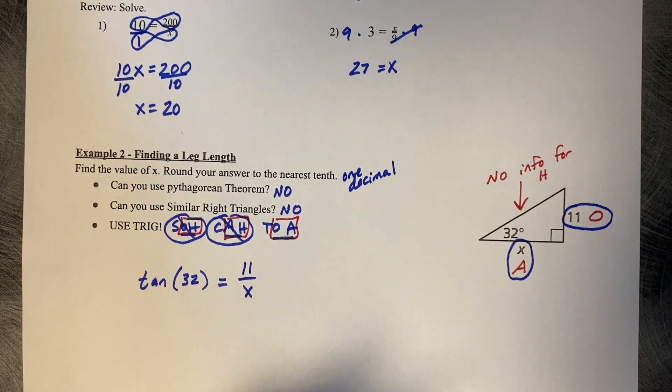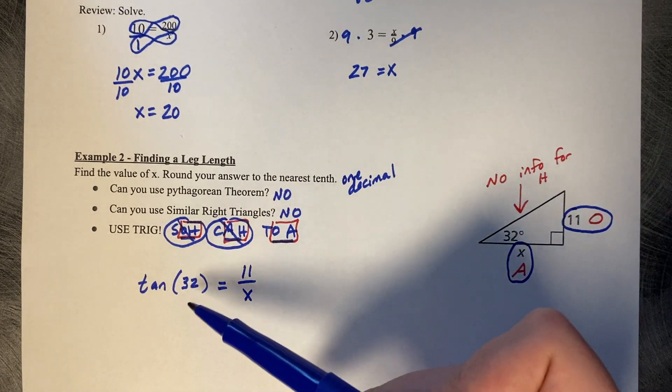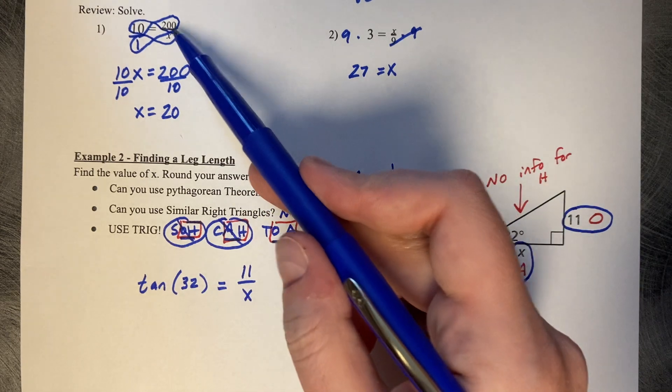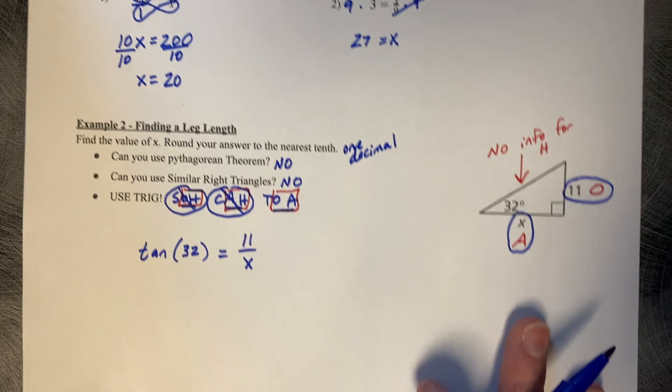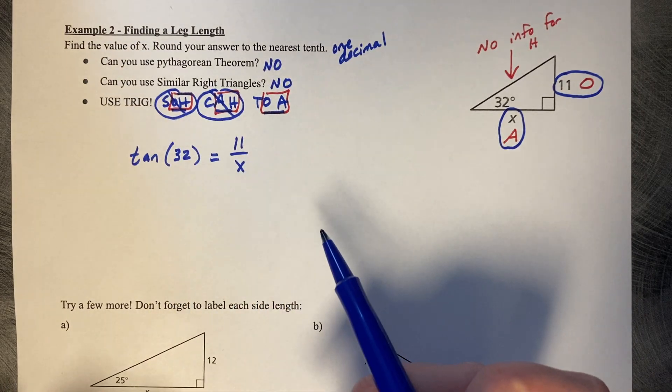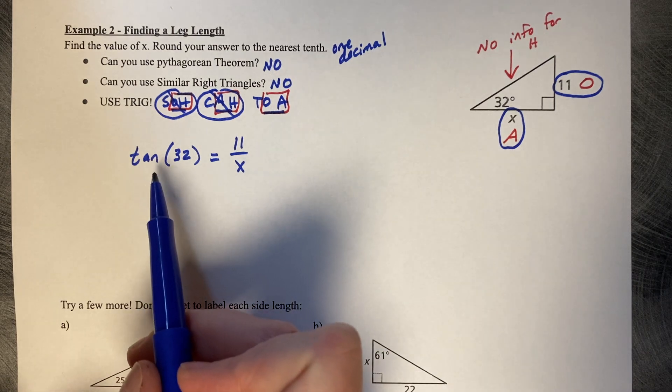This equation looks very similar to the one we solved above. I have some number equal to a value divided by X. The tangent of 32 is just a number, just a value.